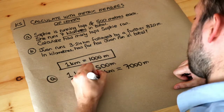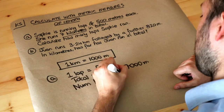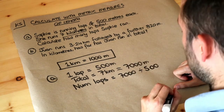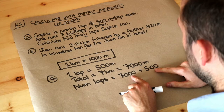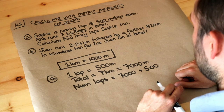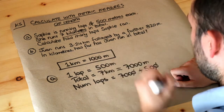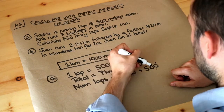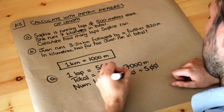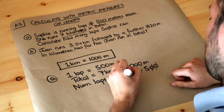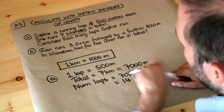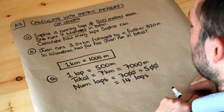The number of laps is 7,000 divided by 500. Remember with divisions you can divide both numbers by the same thing without changing the answer. Dividing by 10 twice removes two zeros, leaving 70 divided by 5, which is 14. So Sophie ran 14 laps — 14 lots of 500 metres gives a total distance of 7,000 metres.